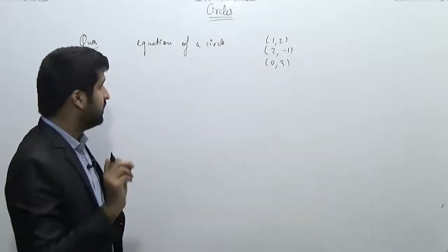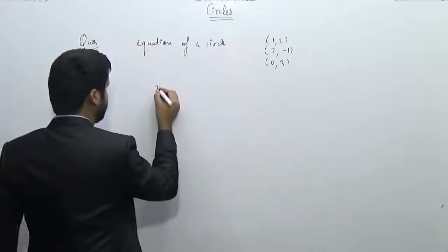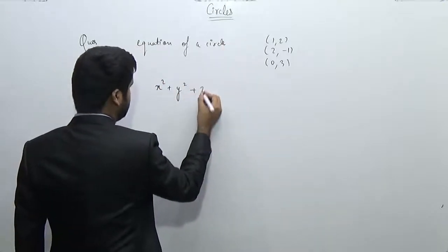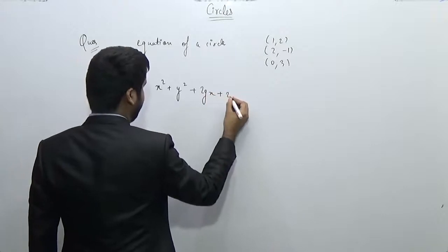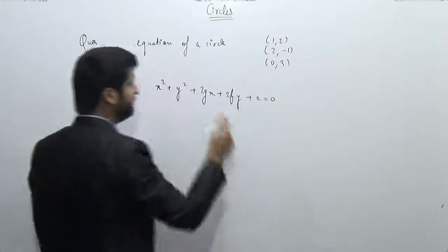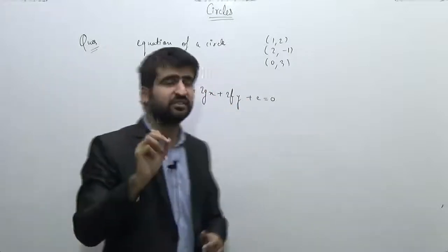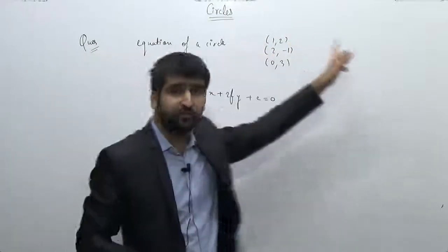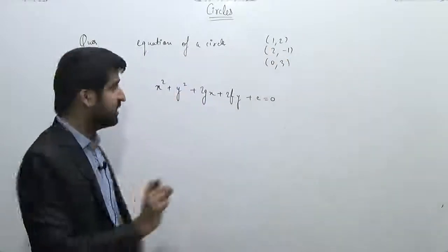Let's consider the general equation of a circle: x² + y² + 2gx + 2fy + c = 0. Now if this circle passes through these three points, it must satisfy the values of x and y for all three points.